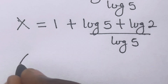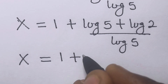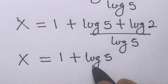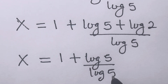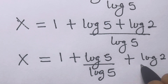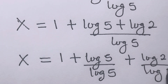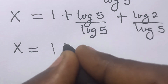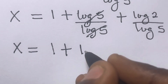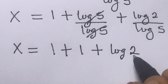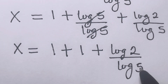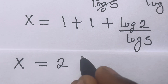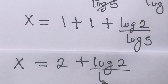So we will have x equals 1 plus log 5 plus log 2, all divided by log 5. If we divide each of log 5 and log 2 by log 5, then log 5 over log 5 cancels to 1, and we are left with log 2 divided by log 5. This means x equals 1 plus 1 plus log 2 divided by log 5, which gives us 2 plus log 2 divided by log 5.